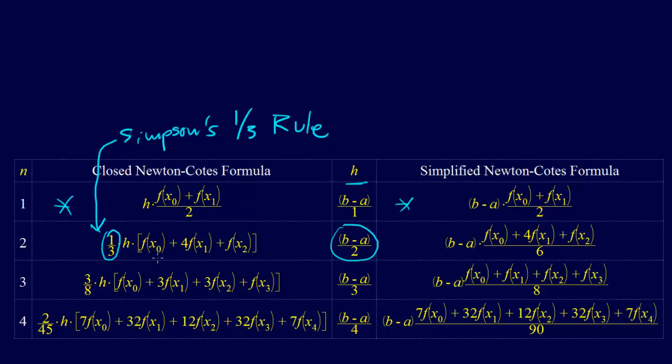So then we also have Simpson's three-eighths rule. The next one's called Simpson's three-eighths rule. And it's called Simpson's three-eighths rule because this coefficient here that we have in front is three-eighths.